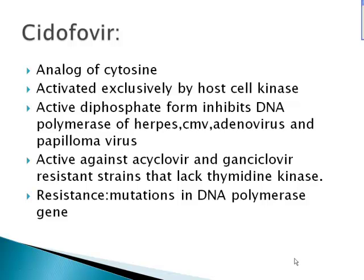The two antiherpetic drugs are Cidofovir and Foscarnet. Cidofovir is an analog of cytosine and is activated exclusively by host cell kinases, as shown in the diagram. Its active form is a diphosphate that inhibits DNA polymerase. It is active against herpes, cytomegalovirus, adenovirus, and papillomavirus.